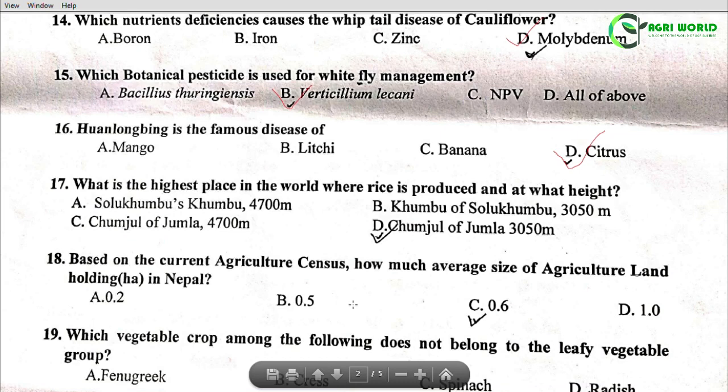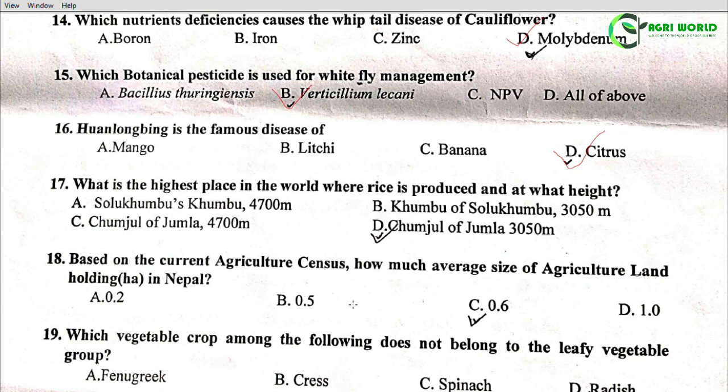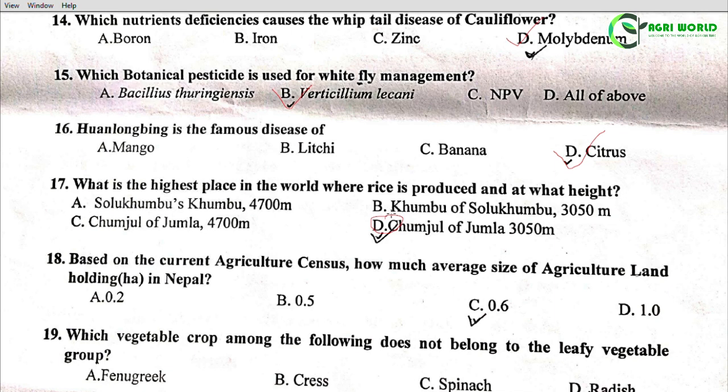Question 17: What is the highest place in the world where rice is produced and at what height? Options: A - Solukhumbu, Khumbu, 4700 meter; B - Khumbu of Solukhumbu, 3050 meter; C - Chumjul of Jumla, 4700 meter; D - Chumjul of Jumla, 3050 meter. The correct answer is Option D: Chumjul of Jumla, 3050 meter.